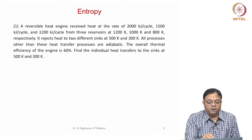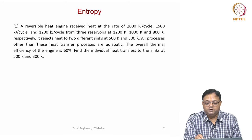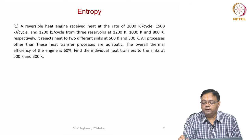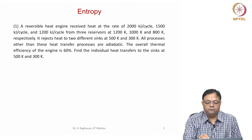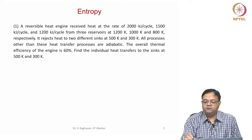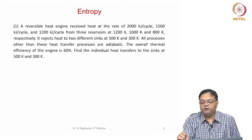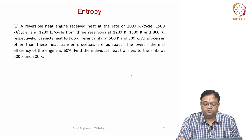First problem: a reversible heat engine receives heat at a rate of 2000 kilojoules per cycle, 1500 kilojoules per cycle, and 1200 kilojoules per cycle from three reservoirs at 1200 Kelvin, 1000 Kelvin, and 800 Kelvin. Let us draw this reversible heat engine.